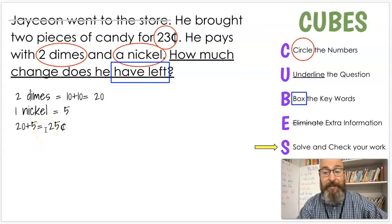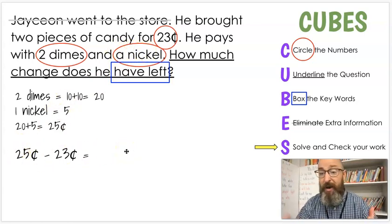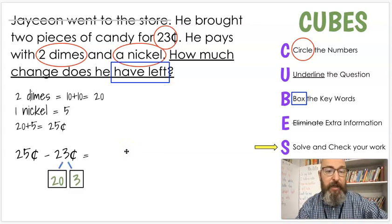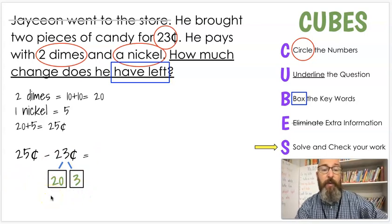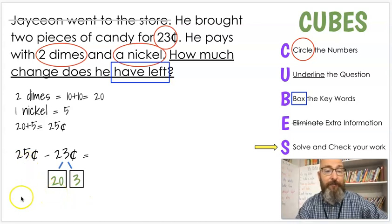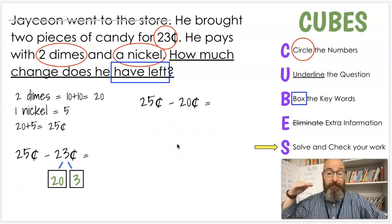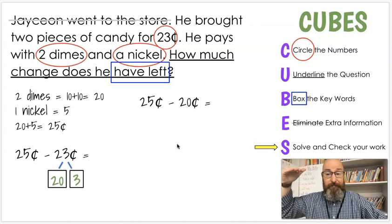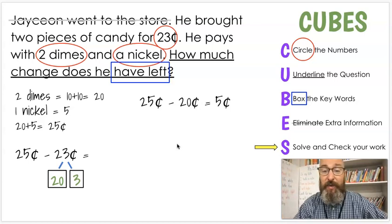We know that we have two dimes and one nickel. And when we figure out how much that is, we need to add those together. So dimes are worth 10 cents each. So we're going to have to add 10 plus 10. We just have one nickel. So that's going to be a five. We know that 10 plus 10 is 20. So two dimes are worth 20 cents. One nickel is worth five cents. We know he gave them all that. We still don't know how much this is worth. So we're going to have to add the 20 cents and the five cents and we get 25 cents. So he gave the person 25 cents to pay.